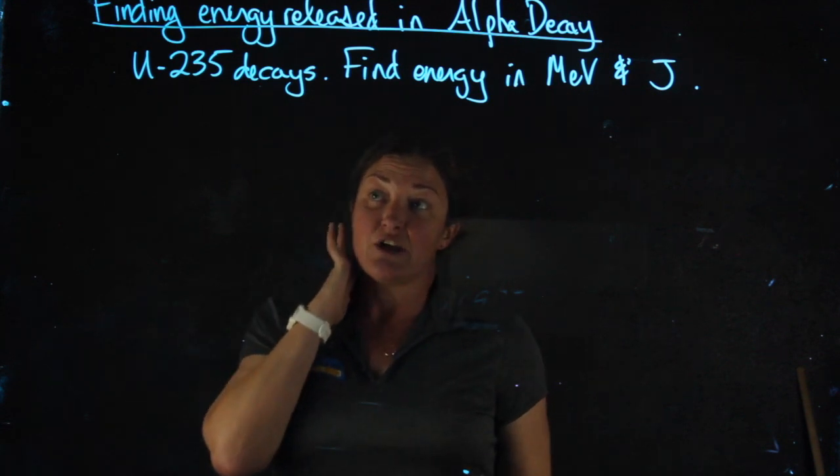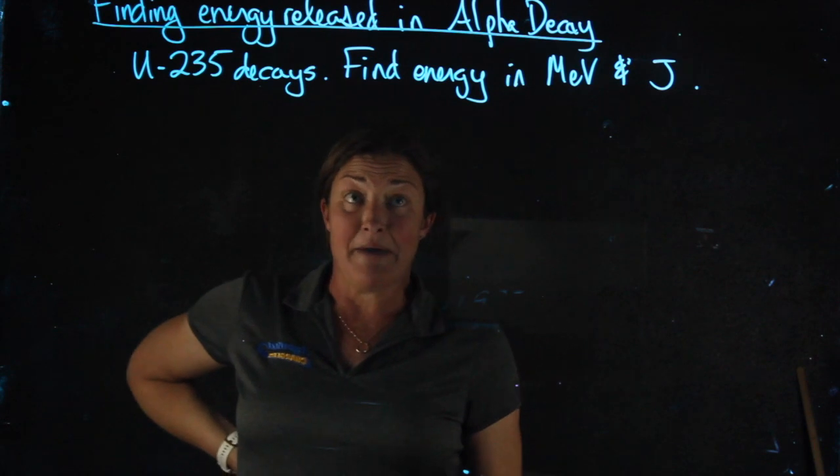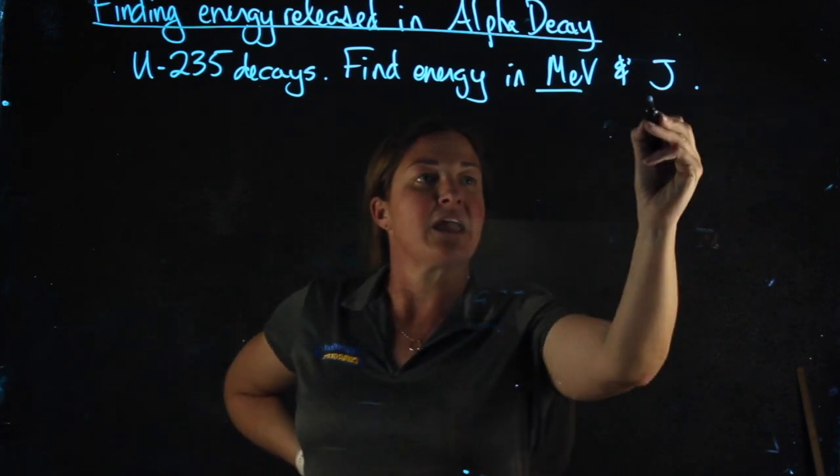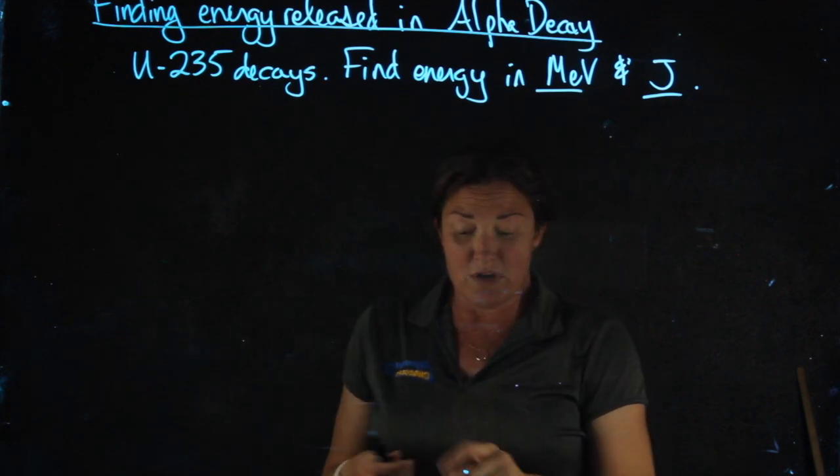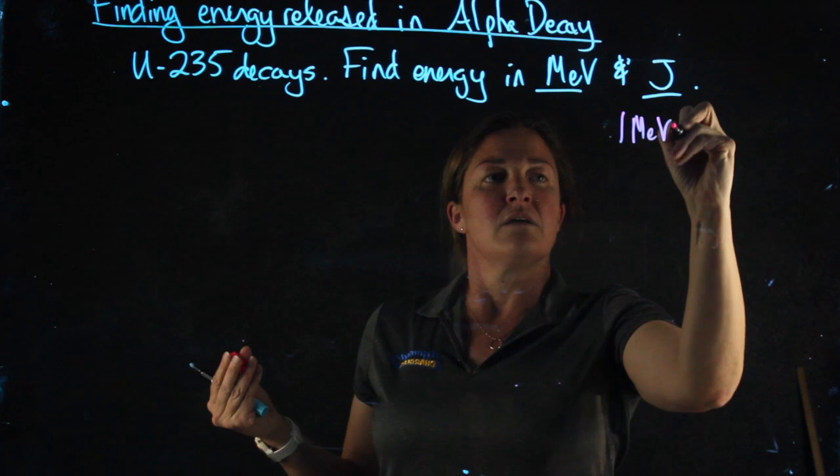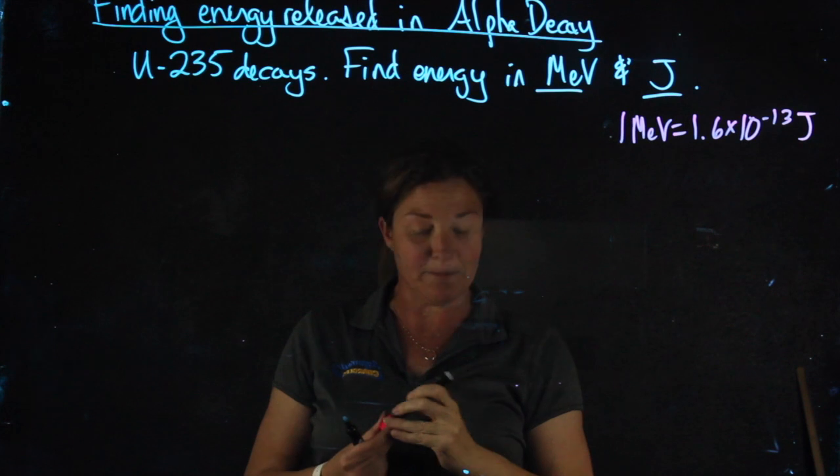On your paper, it says that uranium-235 decays by alpha, it gives you some data about masses, and we're going to find the energy in mega electron volts and joules. You will notice that I gave you the conversion factor, 1 MeV is 1.6 times 10 to the negative 13th joules. We're going to need that.